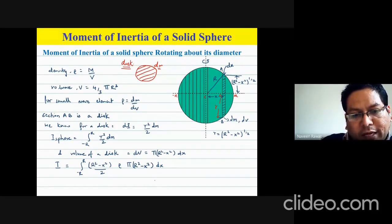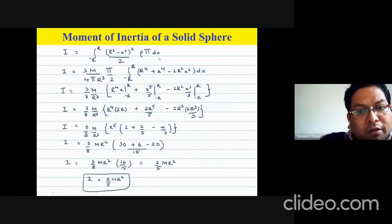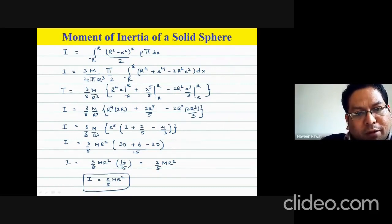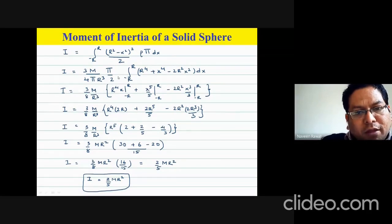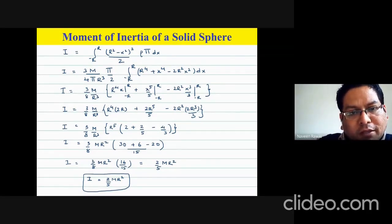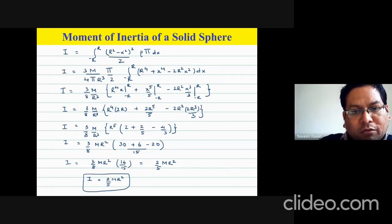We have the term (R² − x²)², which we expand as R⁴ + x⁴ − 2R²x². The integration has no angles — it's just from −R to R. The π terms cancel. Outside we have 3/(8) × m/R³. Inside the integral, integrating term by term: R⁴ integrates to R⁴x, x⁴ integrates to x⁵/5, and −2R²x² integrates to −2R²x³/3.